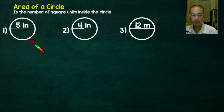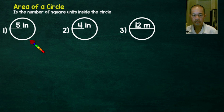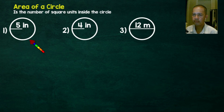You have learned from the previous lessons that the distance around a circle is called the circumference. Meanwhile, if we want to know the space covered by the interior of the circle, it is called the area of a circle, which is the number of square units inside the circle.